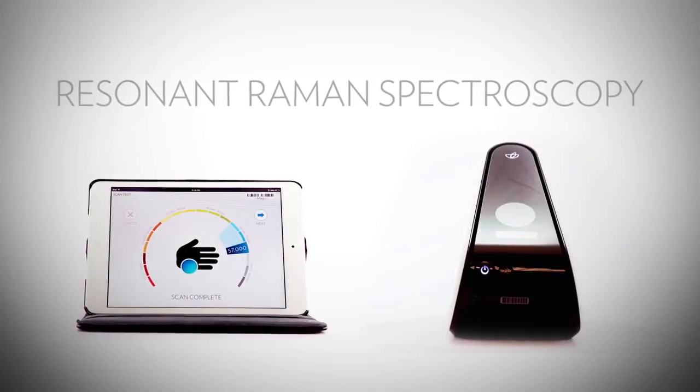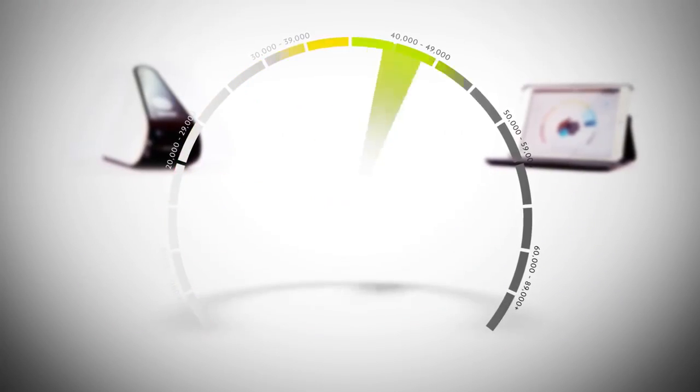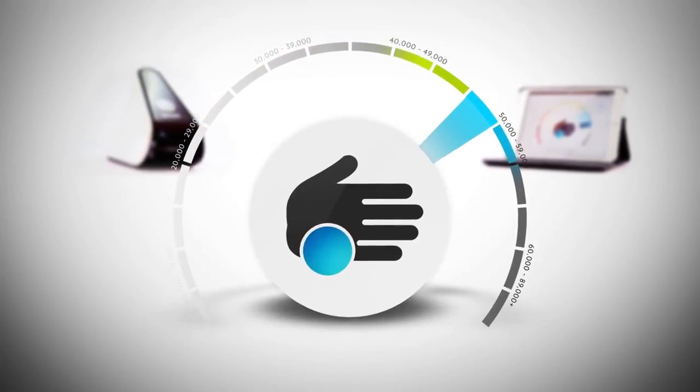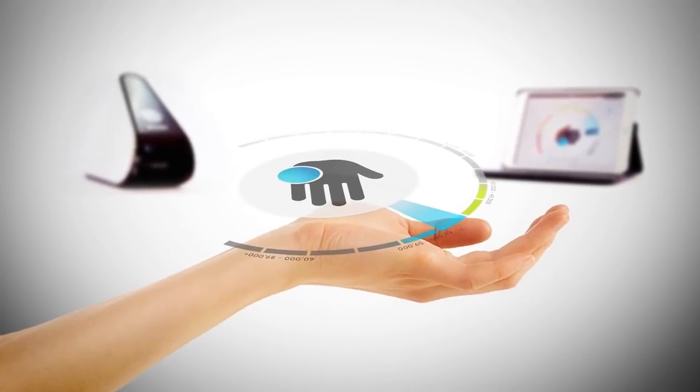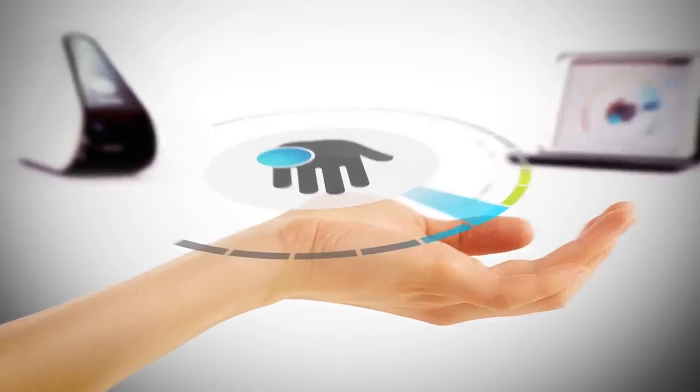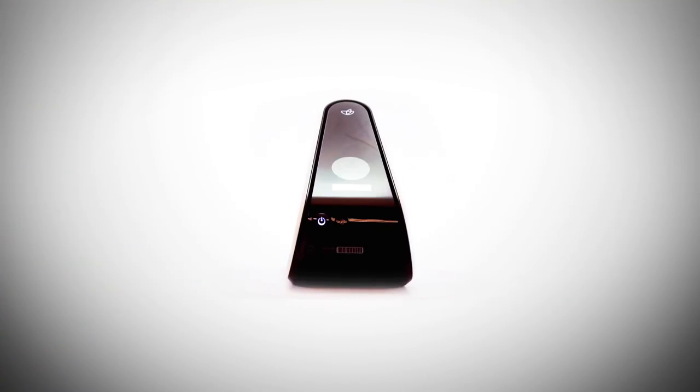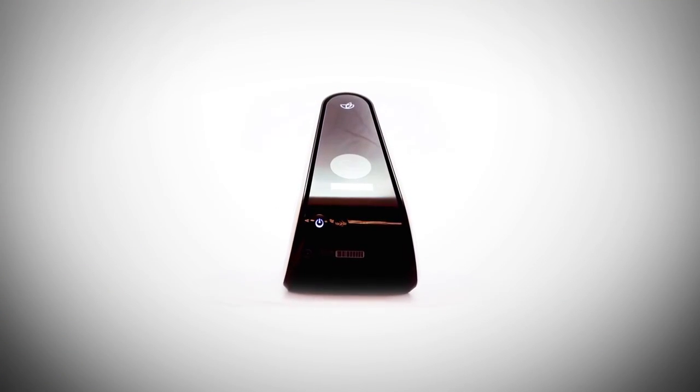The exclusive Biophotonic S3 scanner functions on the principle of scattered light called Resonant Raman Spectroscopy. The S3 scanner is the result of years of research and experience with the science of antioxidant detection. To understand the scanner's technology, you must first understand light.